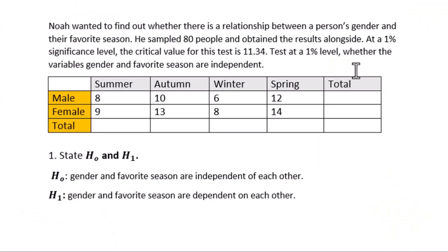This video is about how to use a graphing calculator to work out the chi-square test of independence. Noah wanted to find out whether there is a relationship between a person's gender and their favorite season. He sampled 80 people and obtained the results alongside.